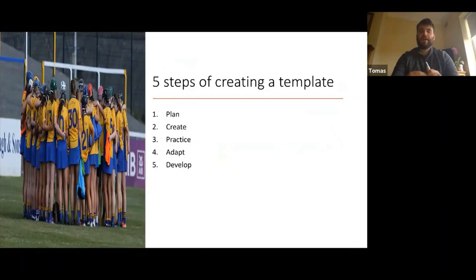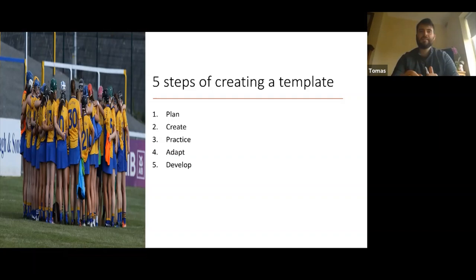The first step is I plan it. It's very rough — I get a piece of paper and start writing down ideas of what I want. For example, I might be looking at puck outs and what I want from puck outs, so I start writing down little ideas and start playing around with different ideas.